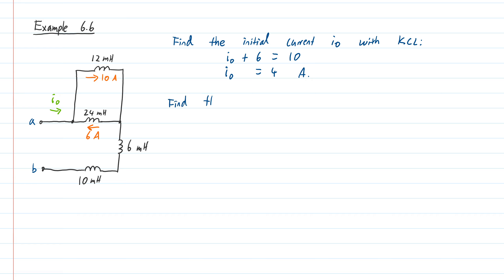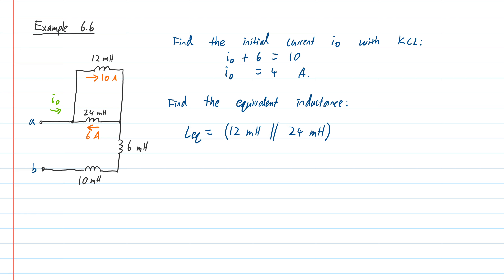Step two is to find the equivalent inductance. Inductors behave like resistors: in series we add them, and in parallel it's the reciprocal of the sum of the reciprocals. Starting at terminal A and looking into my circuit, the first thing I encounter is a parallel branch that splits off down two different parallel paths, which is 12 millihenries in parallel with 24 millihenries.